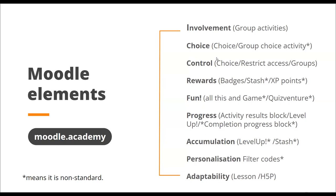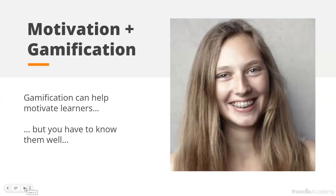For example, if you want to give learners a choice, you can use the standard choice activity or a contributed plugin group choice. Where I've added an asterisk, that indicates contributed plugins — not standard Moodle, but your admin may be able to add them. The activity results block is a standard feature to provide competition. Plugins like Level Up, Completion Progress, and filter codes for personalization are also available. Such Moodle features would ideally increase motivation in your course.